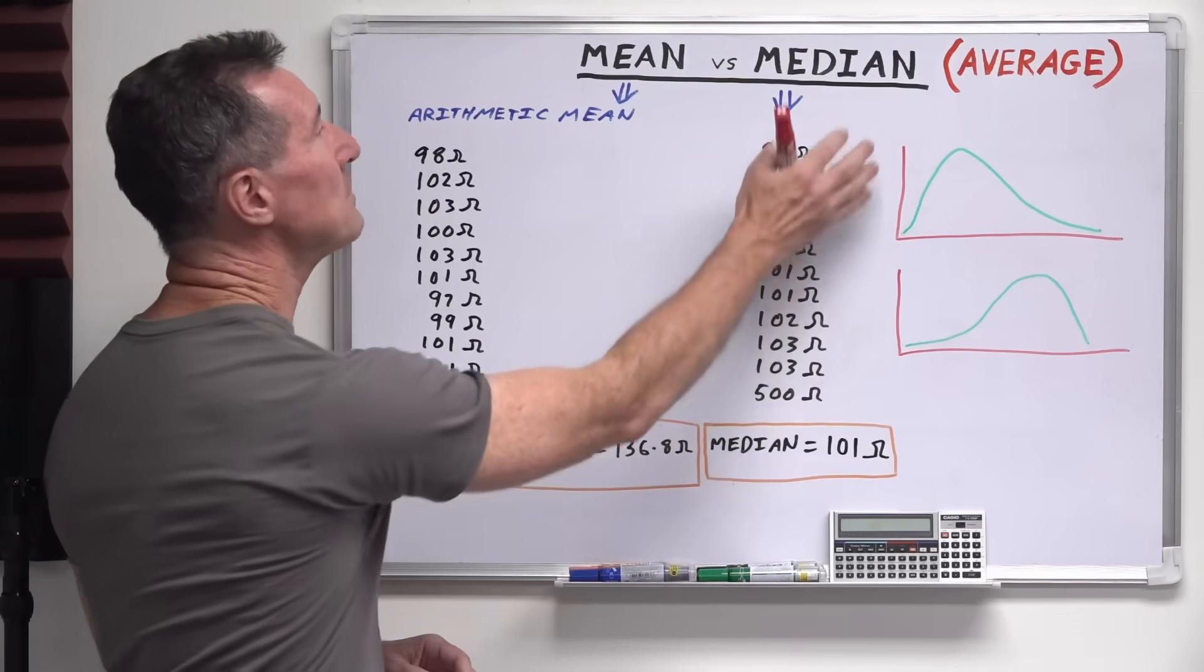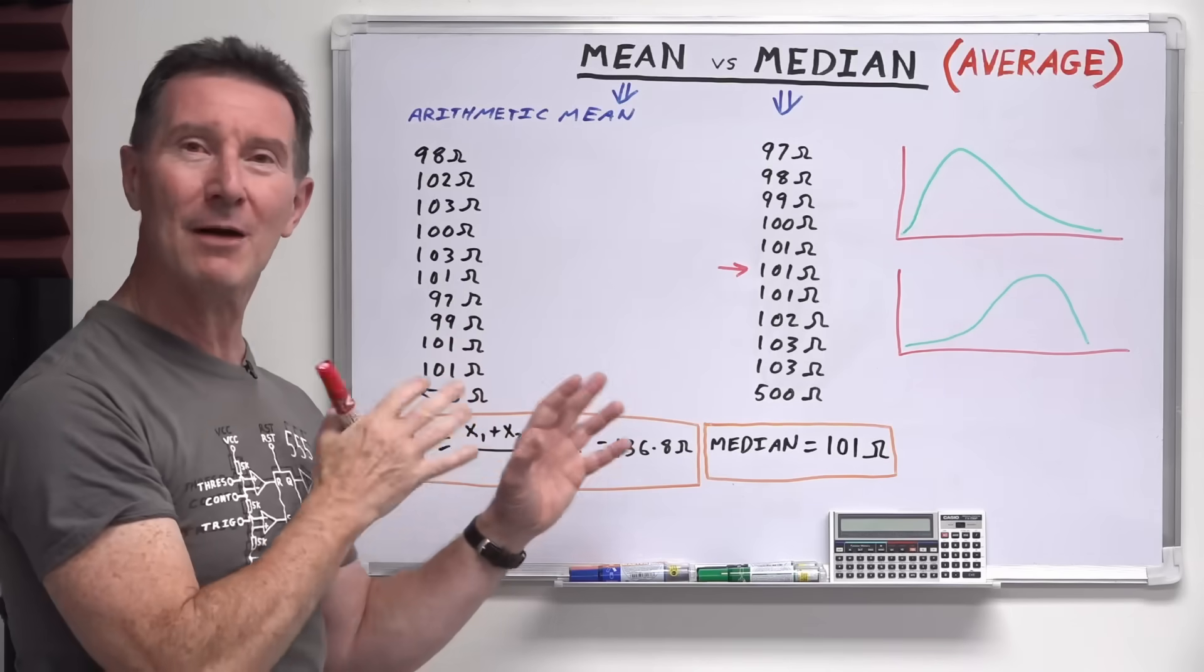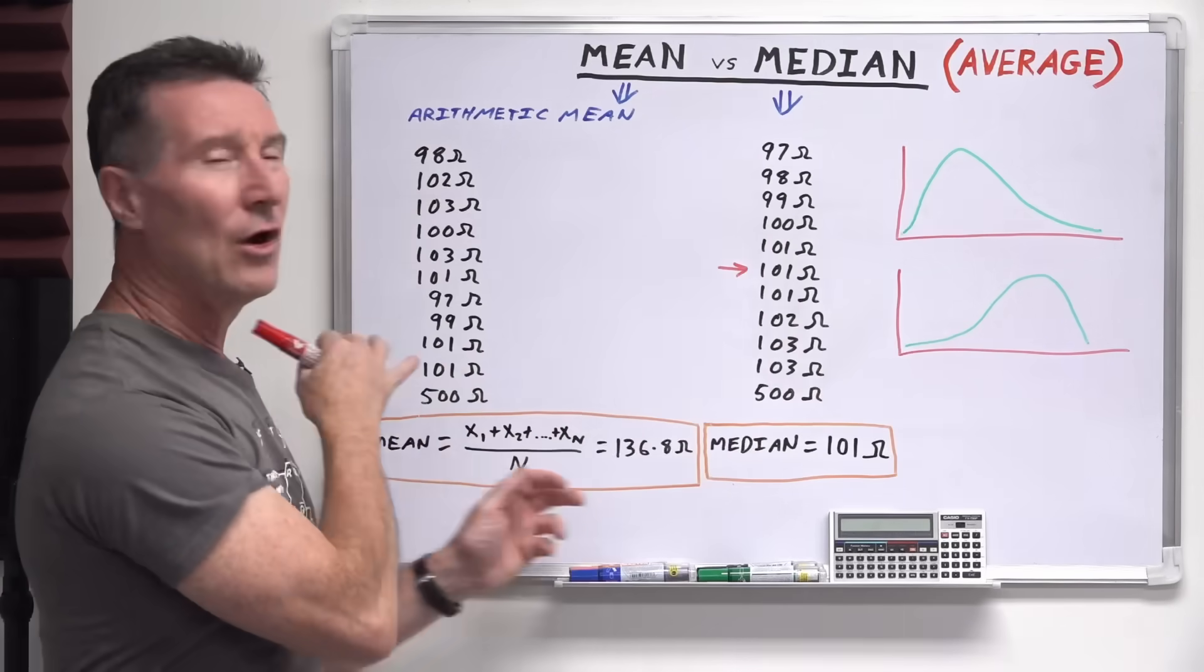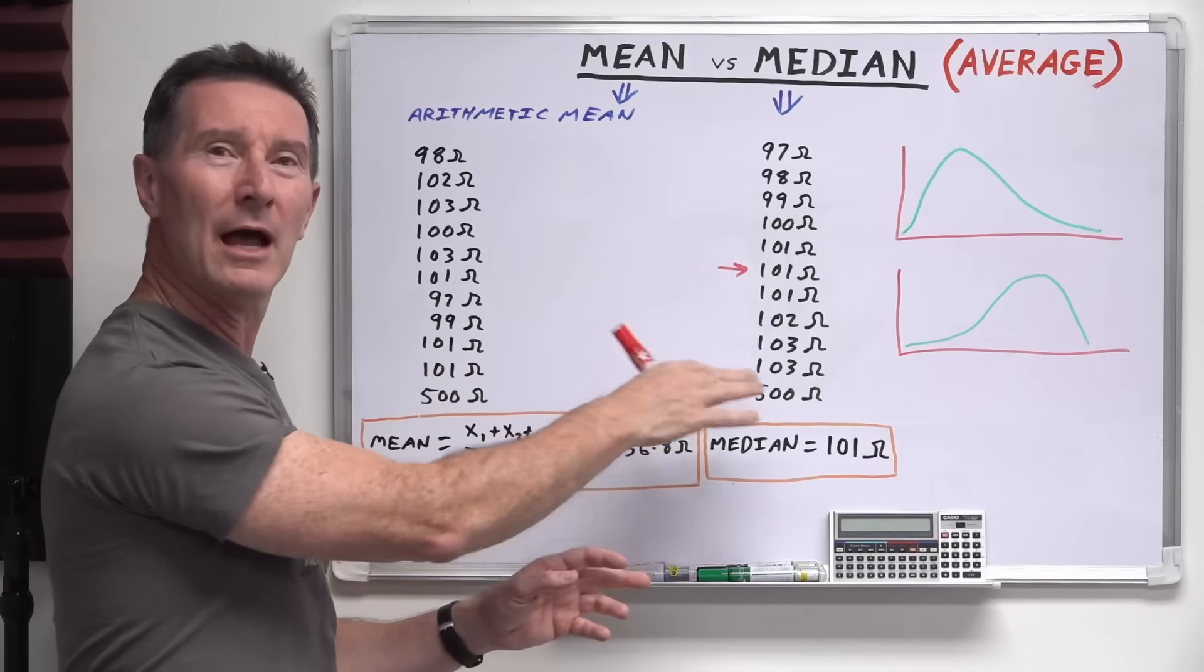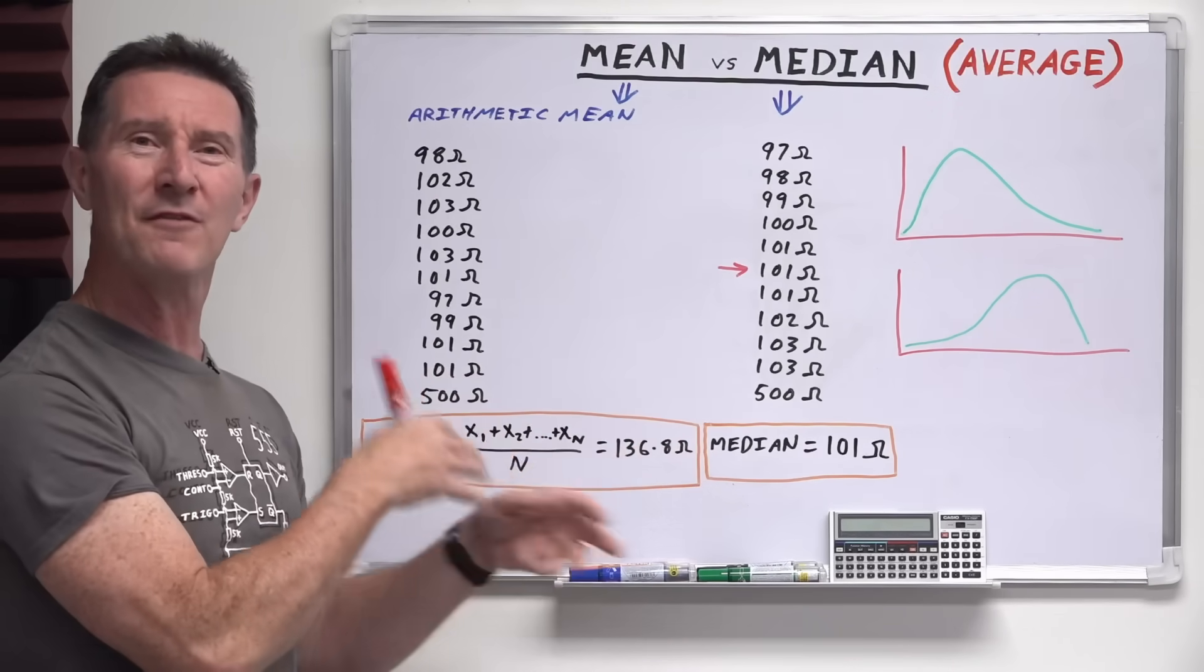So whether or not you use median versus mean, it pretty much comes down to whether or not you had, as I said, skewed data, or you have really big outlier values in your measurement data. If you had like lots of noise.